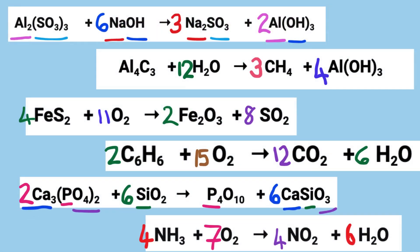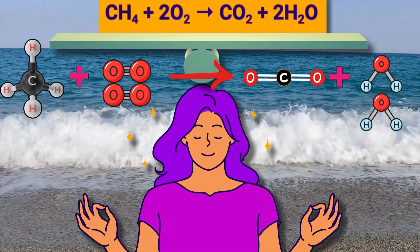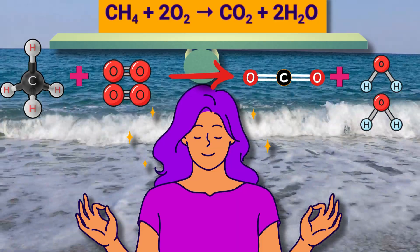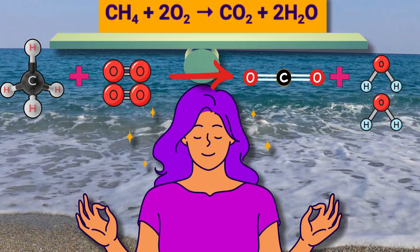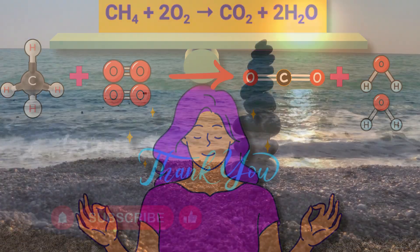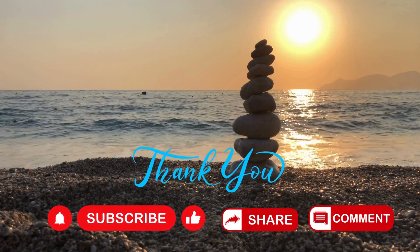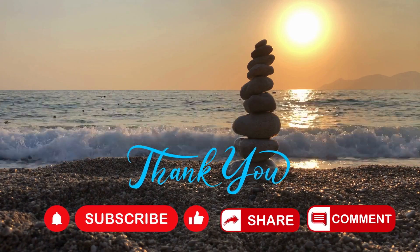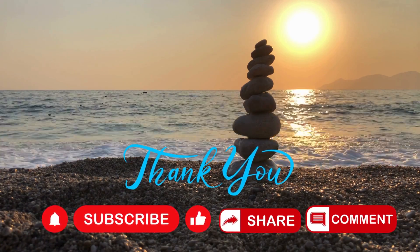There you have it. Balanced equations accurately represent chemical reactions because the number of atoms of each element on the reactant side equals the number of atoms on the product side, thus conserving the mass. Please don't forget to like, share, and subscribe for more science content. Happy learning. Thank you.